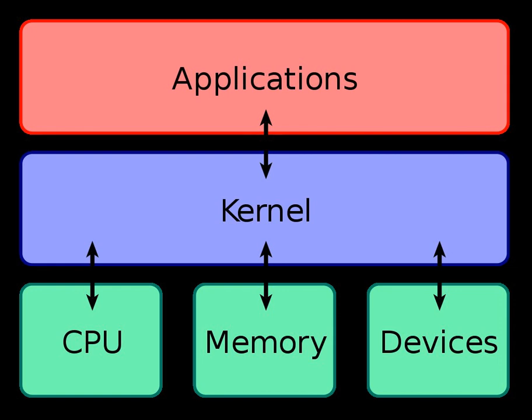In computing, a system call is how a process requests a service from an operating system's kernel that it does not normally have permission to run. System calls provide the interface between a process and the operating system. Most operations interacting with the system require permissions not available to a user-level process — such as I/O performed with a device present on the system, or any form of communication with other processes — which requires the use of system calls.